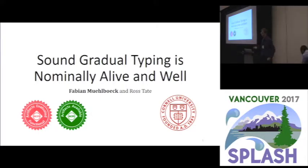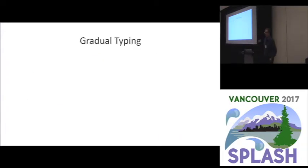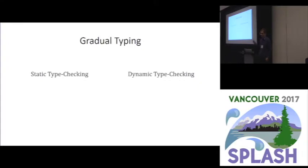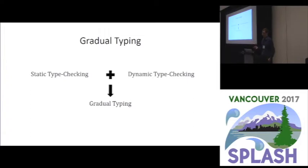If you're new to the session of Gradual Typing, here's the short version. When we talk about type-sound languages, we typically think about them being either statically type-checked or having dynamic type checking. The idea of Gradual Typing is to have both of them in the same language such that we can choose which one we want to use for different parts of our program.